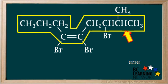We'll select the longest continuous chain of carbon atoms, which we'll show here. Count the carbon atoms in this chain and you'll see that there are nine carbon atoms. Therefore, the name ends as nonene.